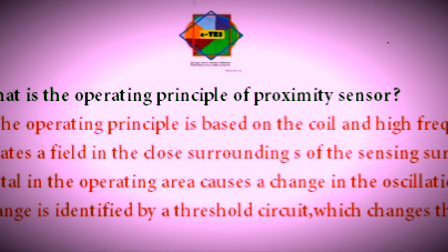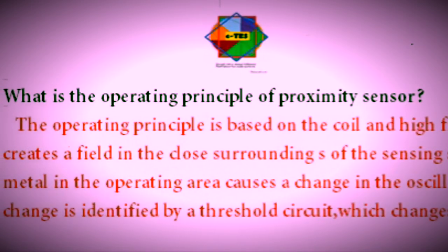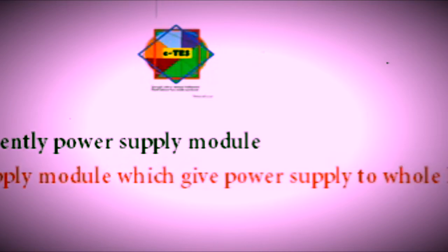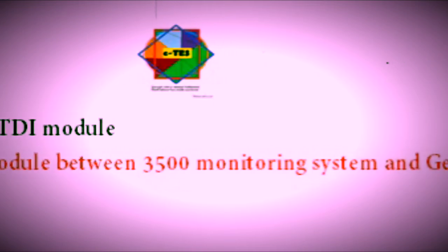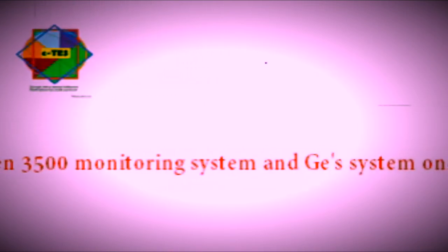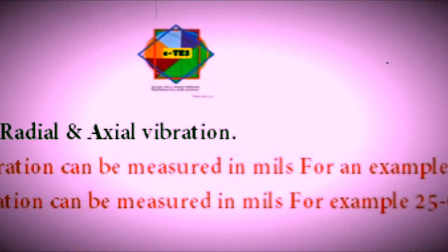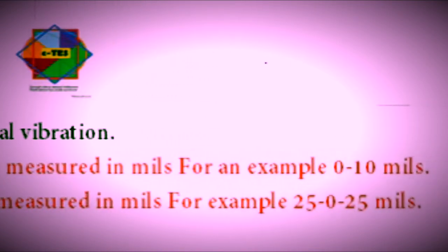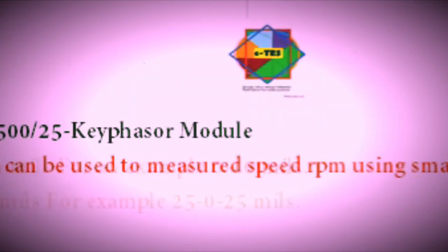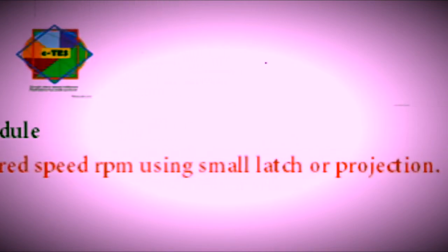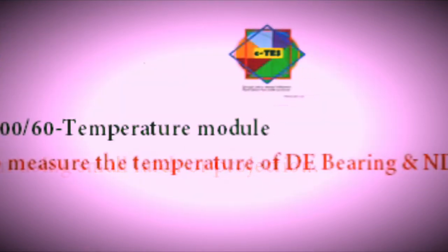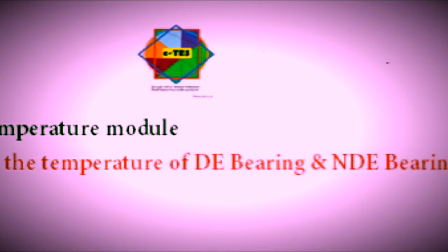The principle is the inductive proximity principle with change in amplitude. The 3500/15 is the power module used in Bentley Nevada. The 3500/22M is a TDX system, an interface module. The 3500/40 is used for radial as well as axial vibration. The 3500/25 is a keyphasor, used to measure speed. The 3500/60 is a temperature module used to measure temperature.